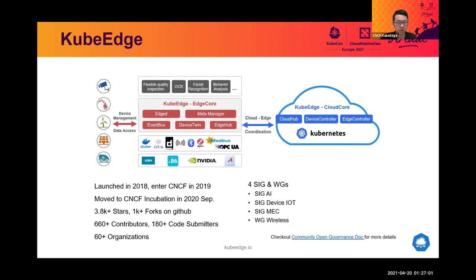The KubeEdge project was started in 2018, targeting on extending Kubernetes and cloud-native technologies to edge computing cases. The project was donated to CNCF in 2019, and last September we moved to the incubation level. Now the community has around 4,000 GitHub stars. Since joining CNCF, we received over 600 contributors from all over the world.